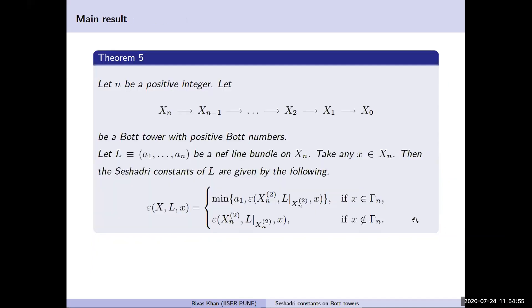Let's move to our main result. Given a Bott tower with positive Bott numbers, if L is a nef line bundle, then for any point x the Seshadri constant is given as follows: for points on the section gamma_{ni}, on the curve gamma_{ni}, it is given by minimum of a_1 and the Seshadri constant of L restricted to X_{n2}. Note that x is always in X_{n2}. Otherwise, it is just the Seshadri constant of L restricted to X_{n2}.